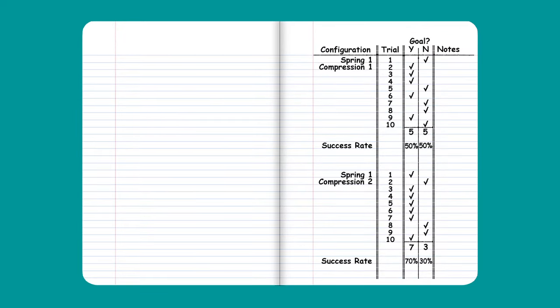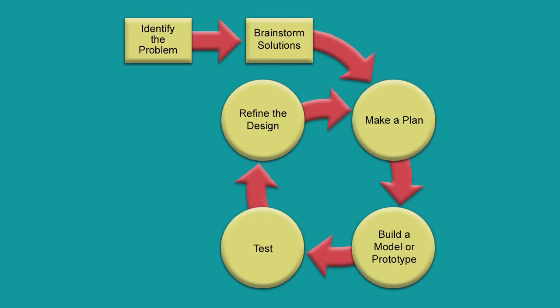Because what might happen, and it always happens in engineering, is you think you're making an improvement, but in fact you're actually making things worse. So, you might have to revert to a previous design. In this redesign process, you have like design one, design two, design three.